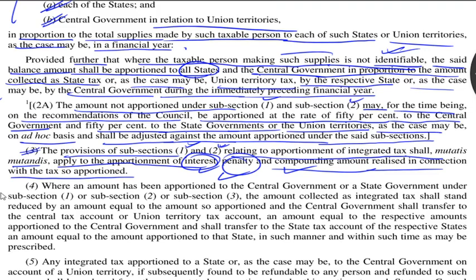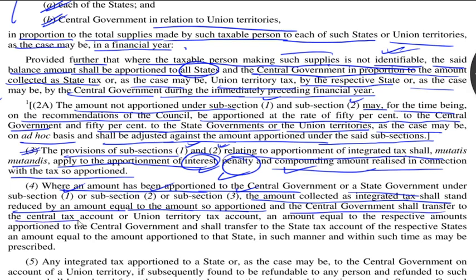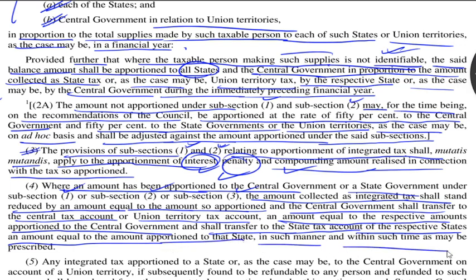Let's see what subsection 4 prescribes. Where the amount has been apportioned to the central government and state government under subsection 1, subsection 2, and subsection 3, the amount collected as integrated tax shall stand reduced by an amount equal to the amount so apportioned. The central government shall transfer to the central tax account or union territory tax account an amount equal to the respective amount apportioned to the central government, and shall transfer to the state, in such manner and within such time as may be prescribed.